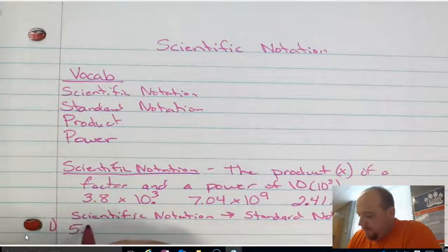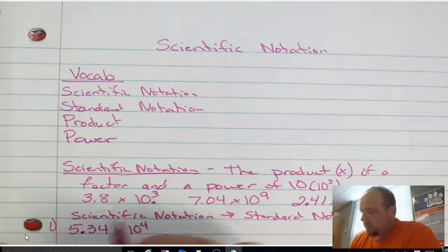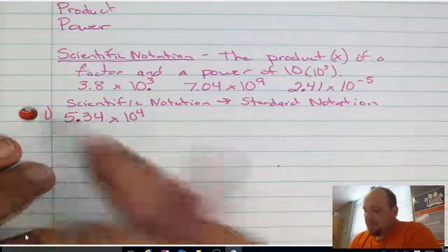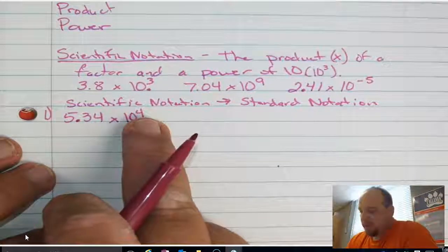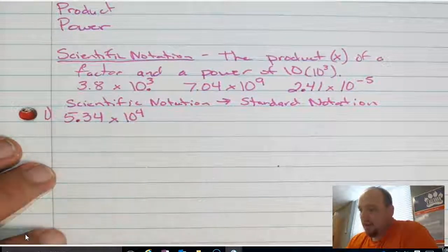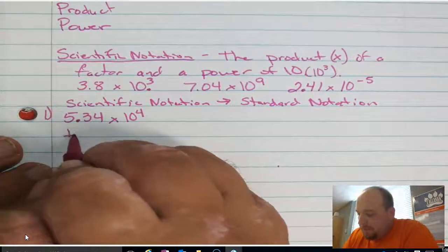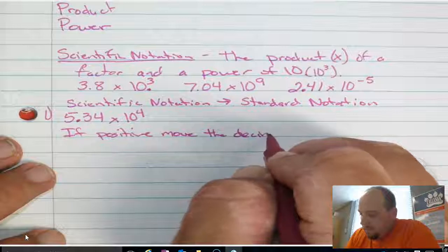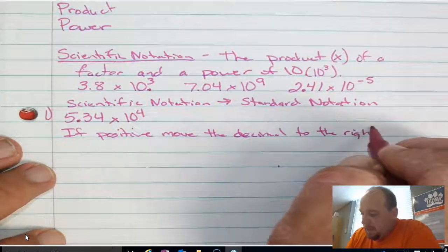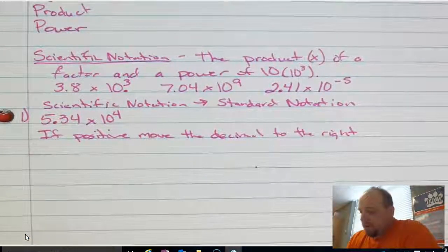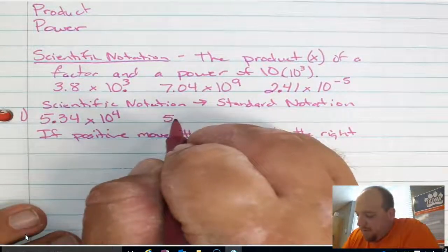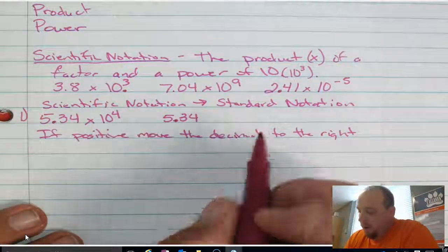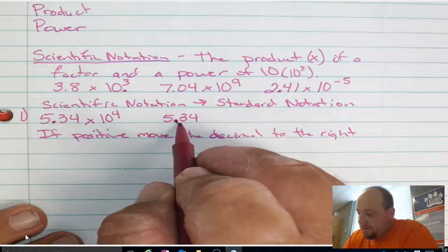The first one I have is 5.34 times 10 to the fourth power. I'm going to look at where the decimal is in my factor — right now it's between the 5 and the 3. The power of 10 has a positive exponent of 4. If the exponent is positive, we move the decimal to the right. If it's negative, we move it to the left. So I rewrite 5.34 and move the decimal four spots to the right: one, two — but now I encounter a problem, there are only two numbers.